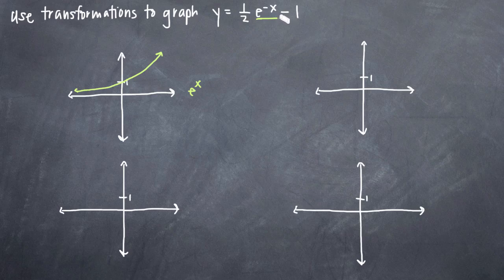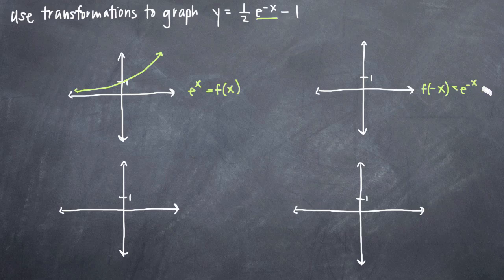We have e to the negative x. So what we want to do is recognize that all we've done here, this function is f of x equals e to the x. Well, we've gone ahead and said f of negative x because we're plugging in negative x for x.